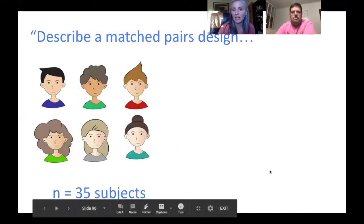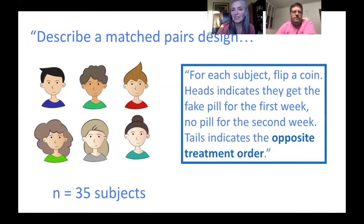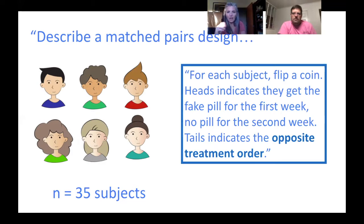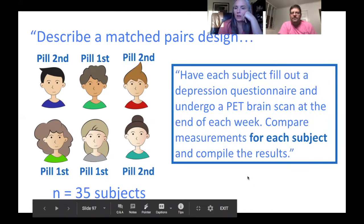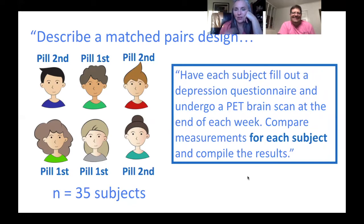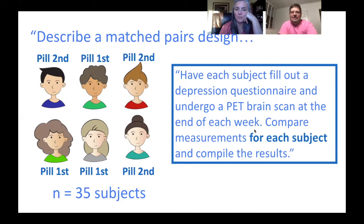To describe the matched pairs design with 35 subjects: for each subject, flip a coin — heads indicates they get the fake pill for the first week and no pill for the second week; tails indicates the opposite. We take a pill for one week, see if it helps, no pill the next week, and see if there's a difference between the two weeks. Have each subject fill out a depression questionnaire and undergo a PET brain scan at the end of each week, then compare the measurements for each subject and compile the results.